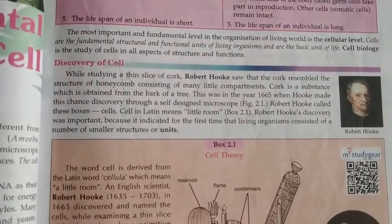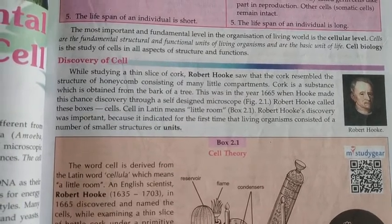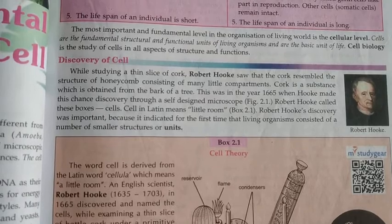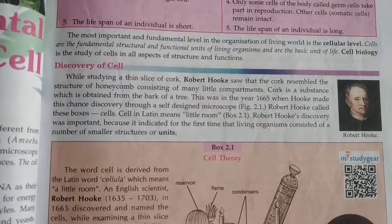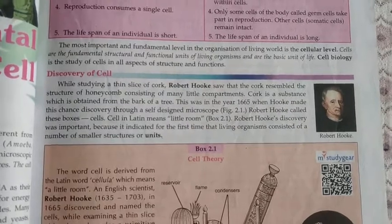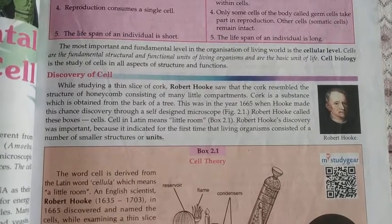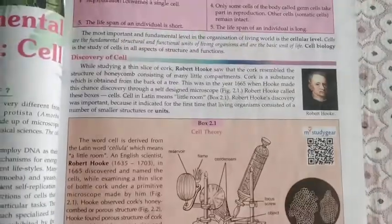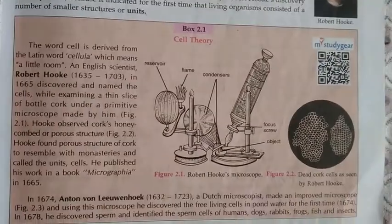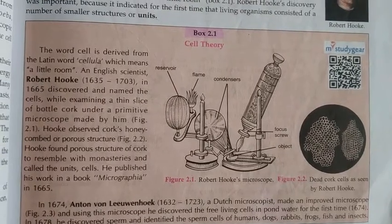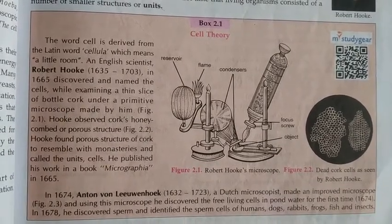The cell was discovered by the biologist Robert Hooke in the year 1665. He discovered cells using his own microscope — a device through which we can observe the structure of cells as well as minute particles. You can see in this picture the microscope designed by Robert Hooke, as well as the dead cork cells he observed.